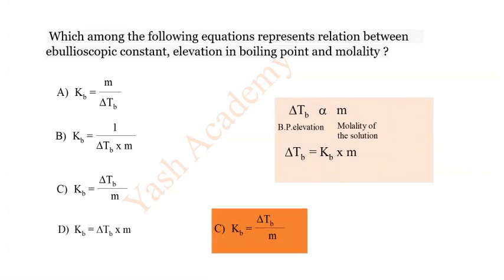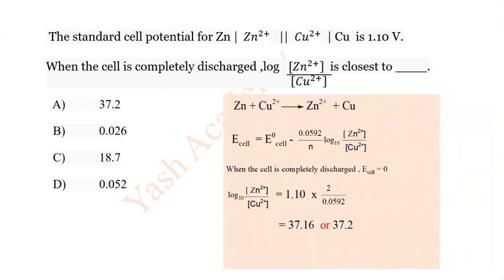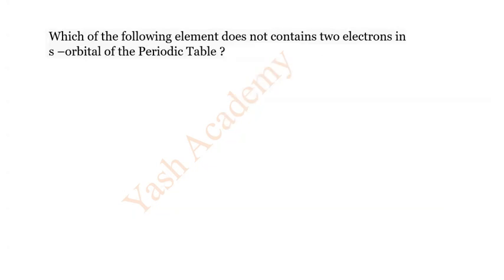Question 2: The standard cell potential of the cell is given as 1.10 V. When the cell is completely discharged, the log of the ionic ratio — concentration of Zn²⁺ to concentration of Cu²⁺ — is closest to which value? Options: A) 37.2, B) 0.026, C) 18.7, D) 0.052. The correct answer is A) 37.3.